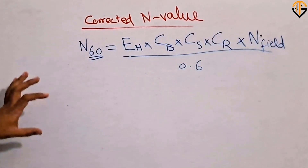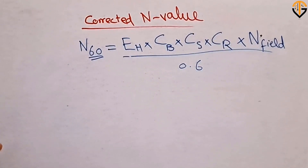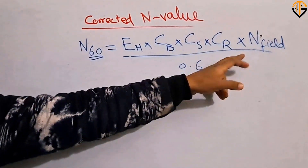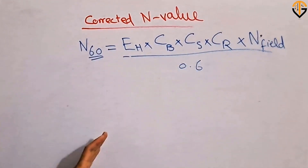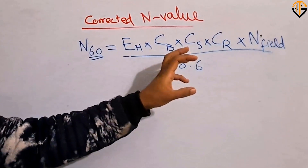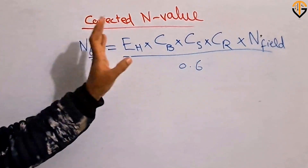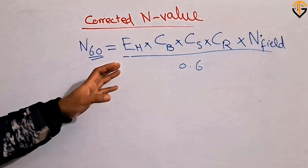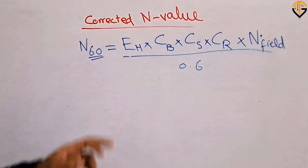In this video we will talk about how we can find out the corrected N value. The value observed in the field is subjected to various corrections because there are lots of inaccuracies involved in the field procedures of standard penetration tests. That is why we need to apply some corrections, as already discussed in our previous lectures in detail.